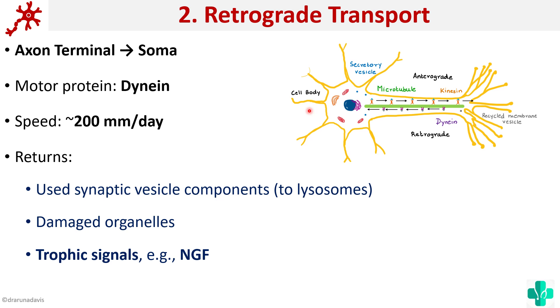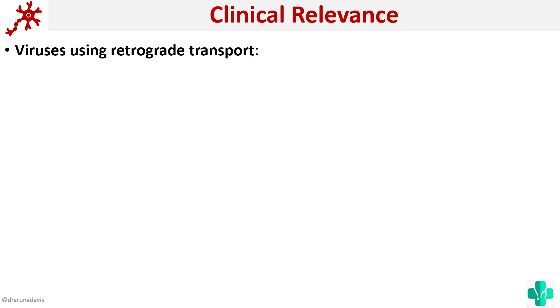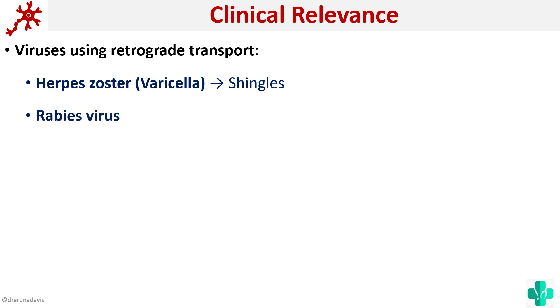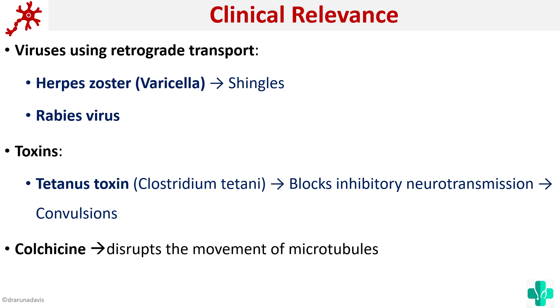An important point is that certain pathogens are also transported by retrograde transport. Viruses like the varicella-zoster virus, which causes shingles, and the rabies virus also move via retrograde transport. Certain toxins like the tetanus toxin also act in a retrograde fashion — they block inhibitory neurotransmission, which is why we get seizures or convulsions during tetanus. The drug colchicine is used to disrupt the movement of microtubules.